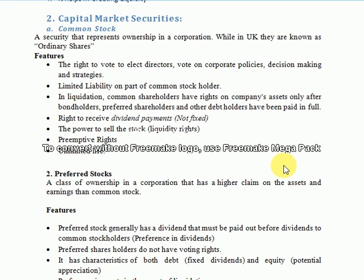So preemptive rights means that when a company wants to issue more common stock, those shares are first offered to the existing common stockholders. If they show interest and buy, their shareholding increases. If they do not show interest in purchasing the additional common stock, then those shares are offered to the public.